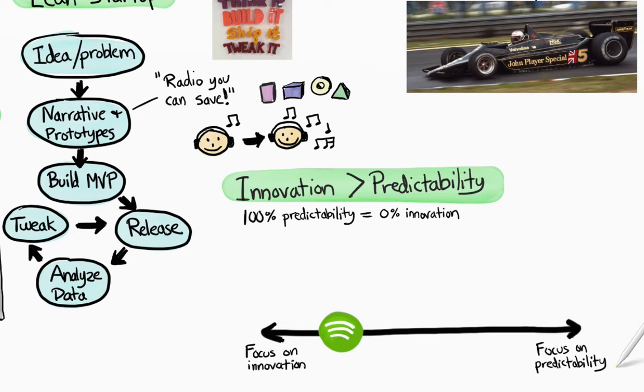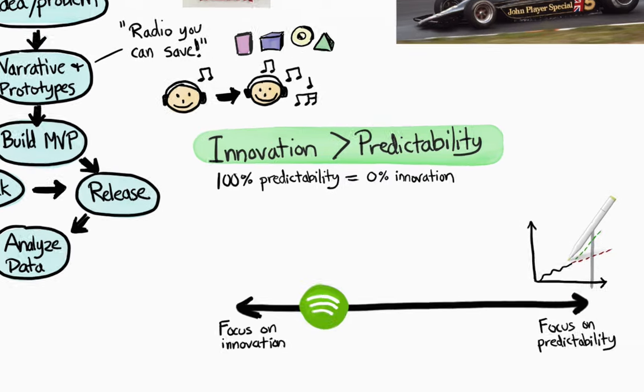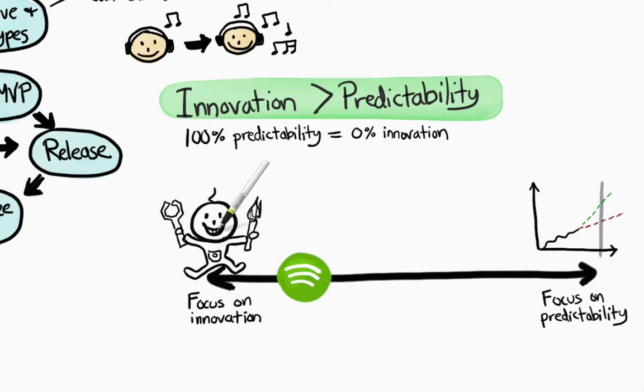Of course, sometimes we do need to make delivery commitments, like for partner integrations or marketing events, and that sometimes involves standard agile planning techniques like velocity and burn-up charts. But if we have to promise a date, we generally defer that commitment until the feature is already proven and close to ready. By minimizing the need for predictability, squads can focus on delivering value instead of being enslaved to someone's arbitrary plan.